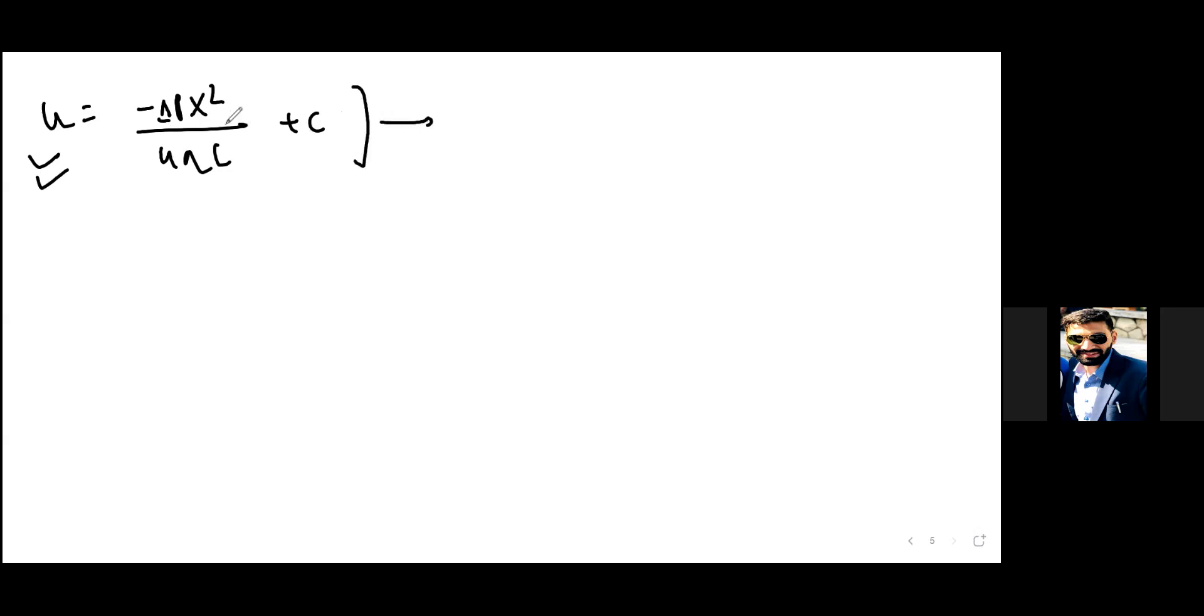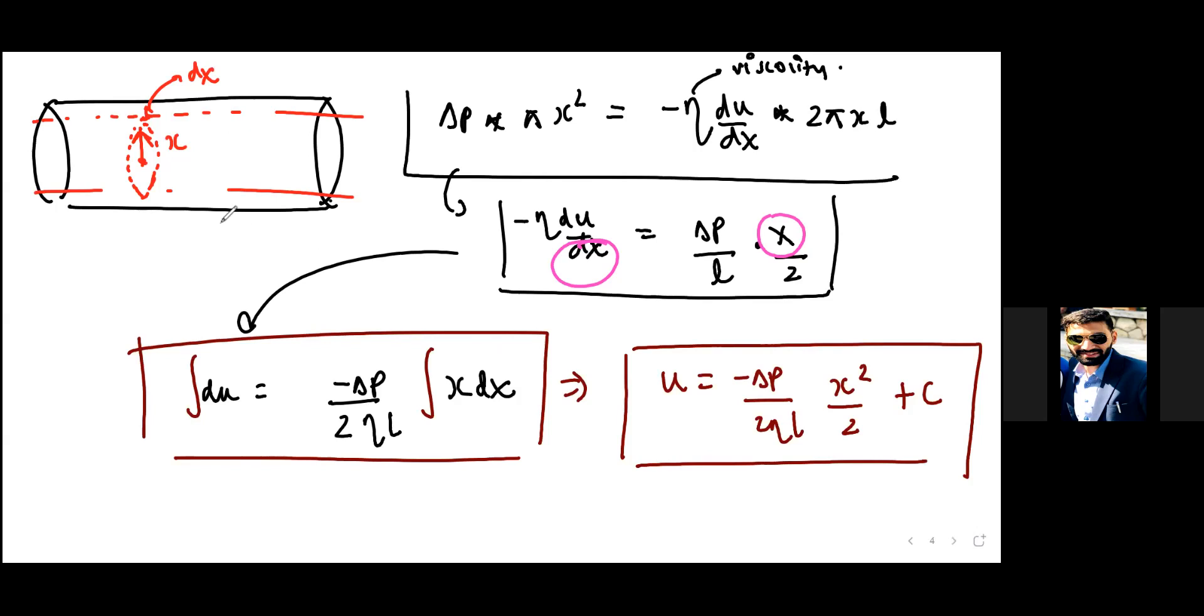Also remember that as x is increasing, your velocity is decreasing, which was the way the case was set up. With increasing x, we are going towards the wall of the pipe, and along the wall of the pipe, your velocity is zero, as we discussed earlier.